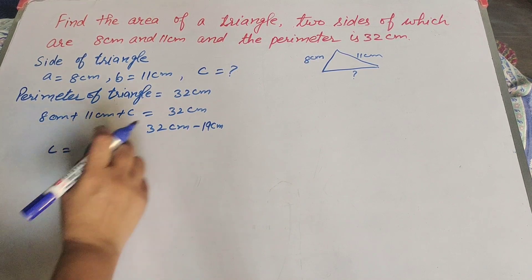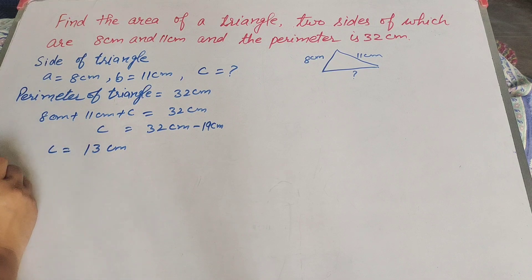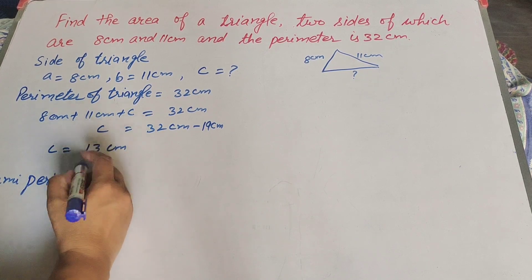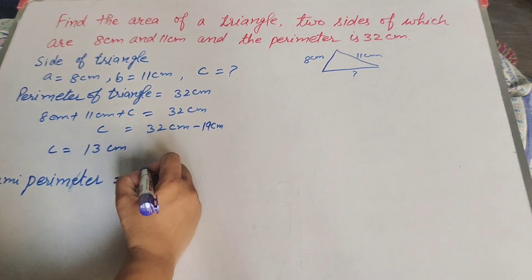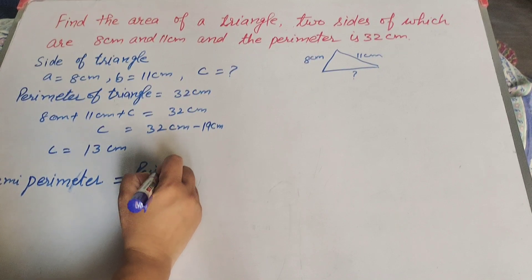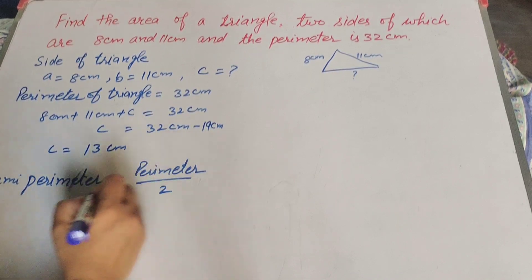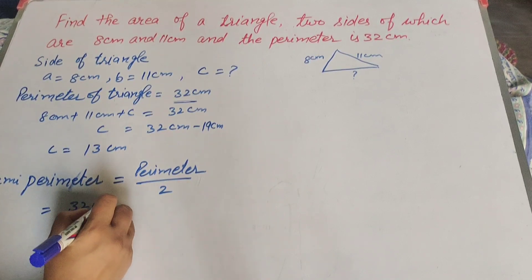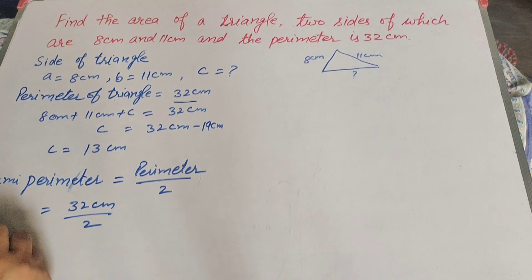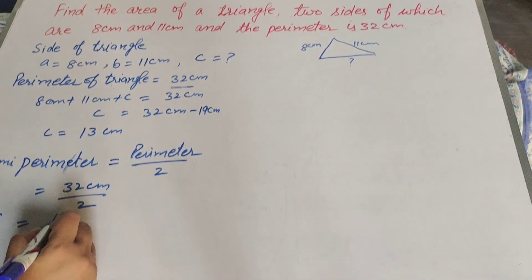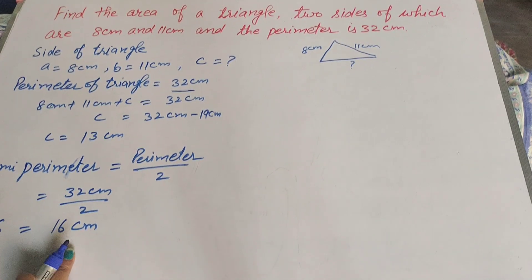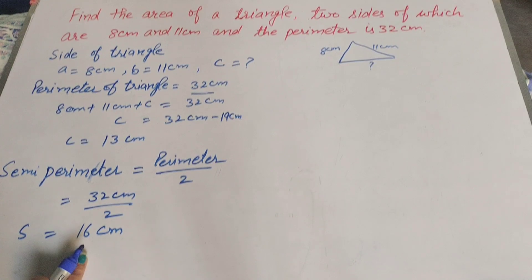The length of the third side is 13 centimeters. Now we find the area of this triangle using Heron's formula. First we find the semi-perimeter: s equals perimeter over 2, which is 32 divided by 2, giving us s equals 16 centimeters.